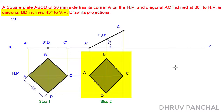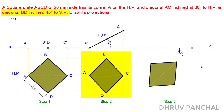In Step 3, we will consider the plate's inclination with the vertical plane. So we will draw the top view of Step 2 at an angle of 45 degrees in Step 3. Take any point on line XY and with the help of a protractor from that point, draw a line at an angle of 45 degrees. As per the given data, the diagonal BD is inclined at 45 degrees to the vertical plane. So draw the top view of Step 2 in Step 3, keeping diagonal BD on the 45 degree line, as shown.